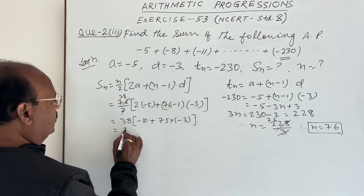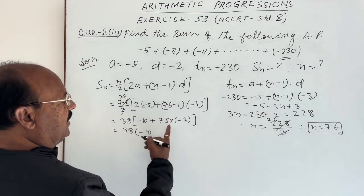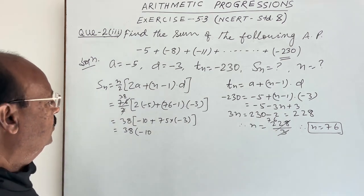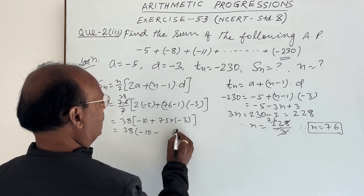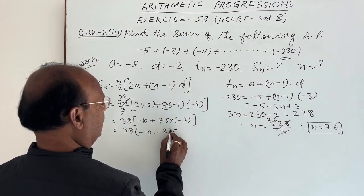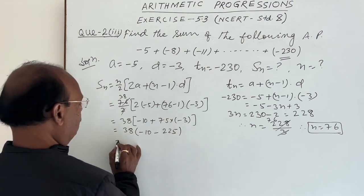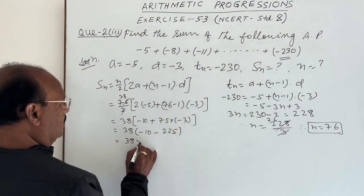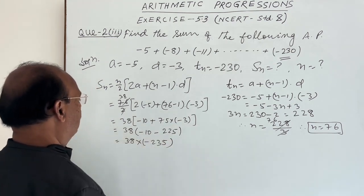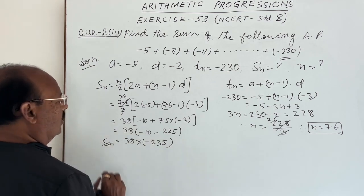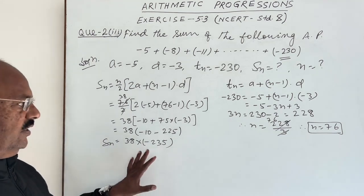And this is equal to 38 into minus 10 multiplied, 75 into minus 3 is equal to minus of, 3 fives are 15, 3 sevens are 21, and 1, 22. So this is equal to 38 into minus of 235. This is value of Sn. After multiplying it, you will get the answer, required answer.